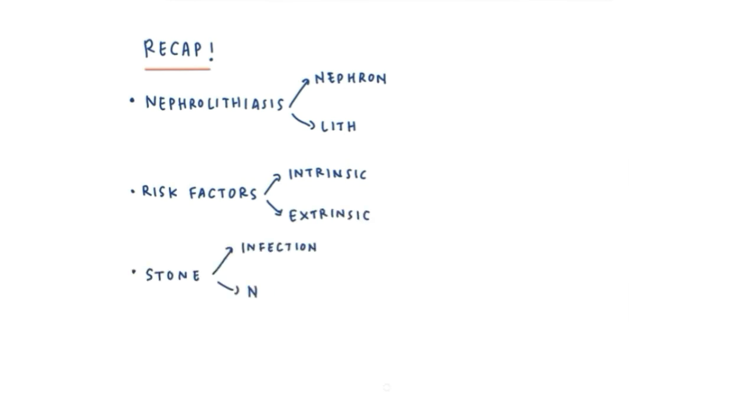To recap: nephrolithiasis consists of two words, nephron and lith. Risk factors include intrinsic factors and extrinsic factors. Stone based on the formation process divided into infection stone and non-infection stone. Treatments include general therapy and specific therapy to remove the kidney stones.